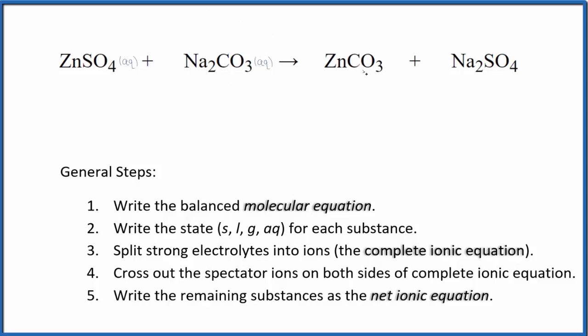However, when you have a carbonate bonded to something like zinc, a transition metal, that's going to be insoluble. That means it's going to be a solid. These two substances are going to react, and this is going to create this solid here that will fall to the bottom of the test tube as a precipitate.